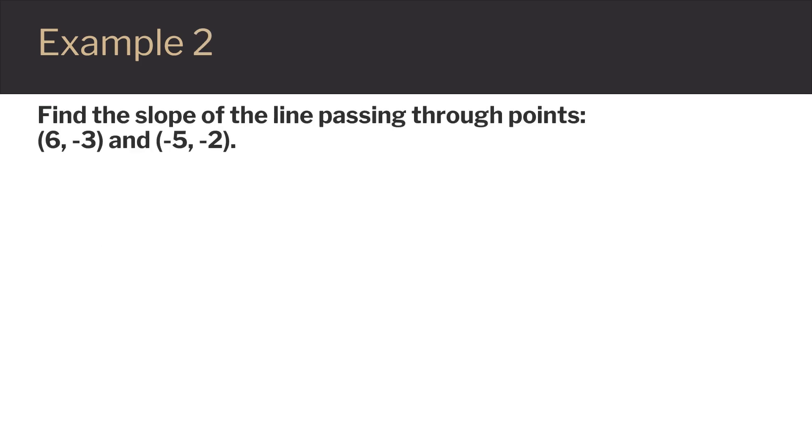For this next example, we want to find the slope of a line passing through the points (6, -3) and (-5, -2). Since m equals y2 minus y1 over x2 minus x1, we will follow the same process.